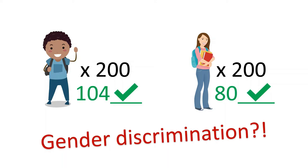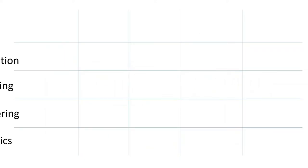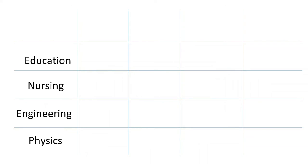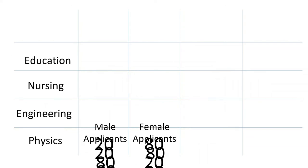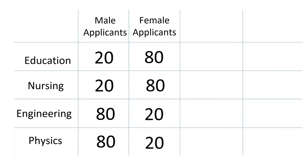Not quite. First, let's look at the graduate programs. There are four: education, nursing, engineering, and physics. Note how the women apply disproportionately higher to the first two, and men apply disproportionately higher to the second two.